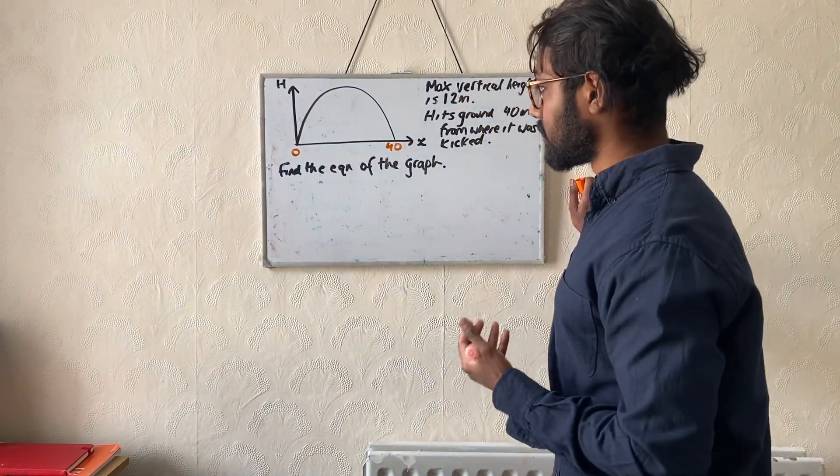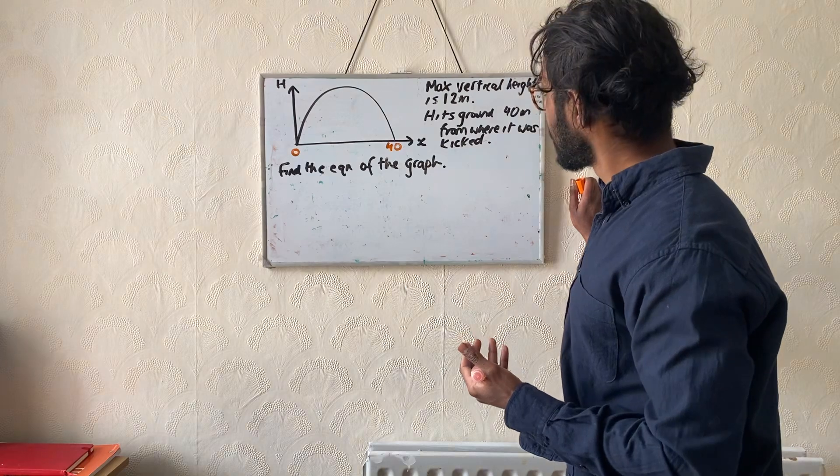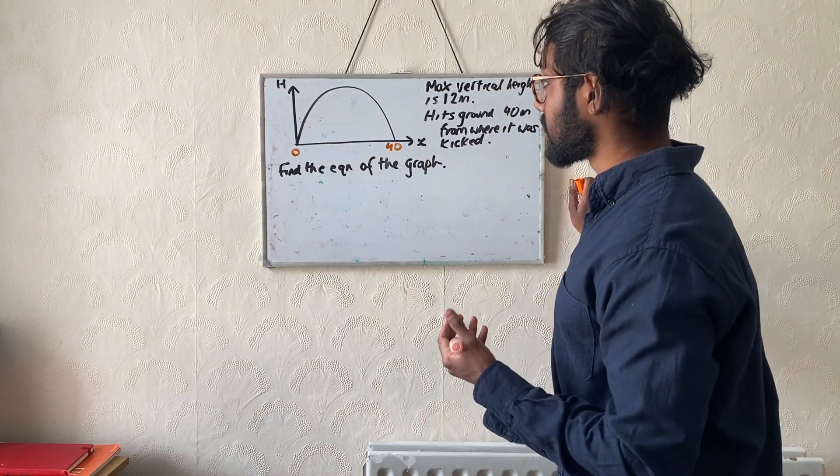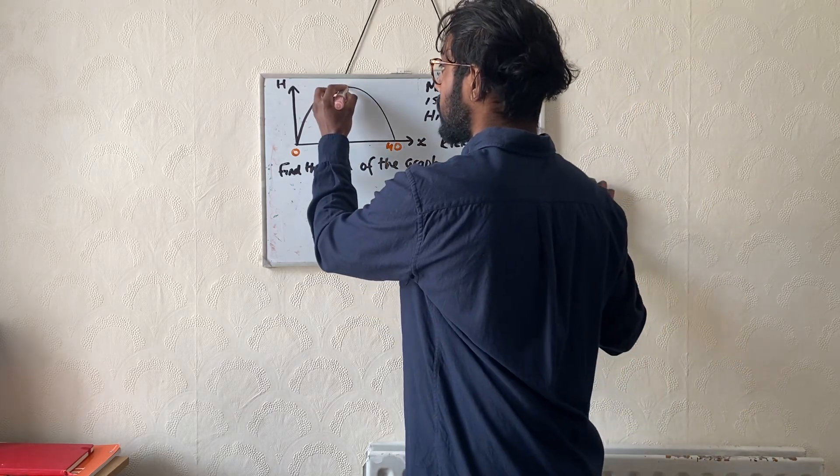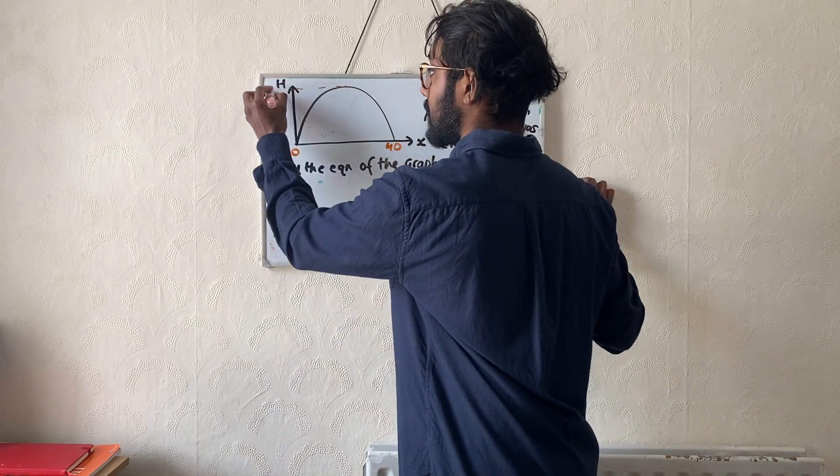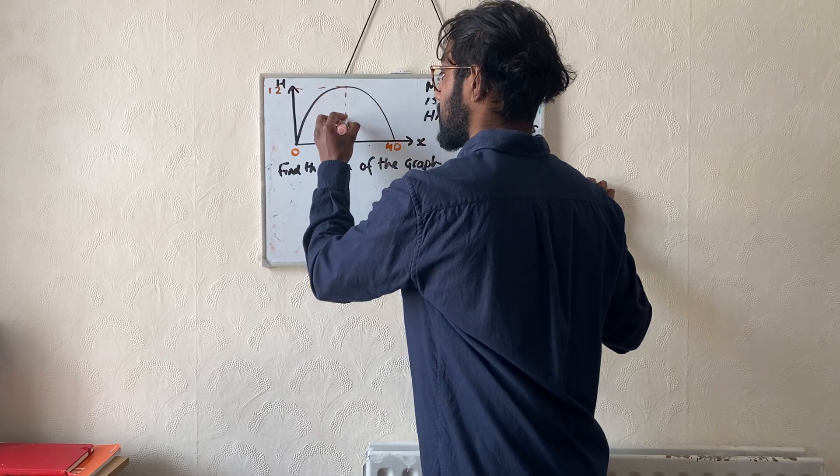Now one property of the quadratic graph is that it's symmetrical. Because it's symmetrical and it reaches maximum vertical height of 12 metres, we know that the y-coordinate of the turning point, the maximum point, is 12 and this must be 20.